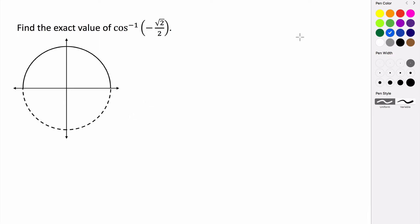So again, remember, this just means for what angle measure is the cosine of theta equal to negative rad 2 over 2. So we're just trying to figure out what theta is that gives us an angle of negative rad 2 over 2.